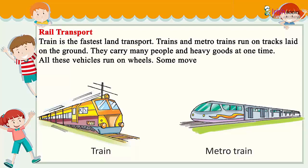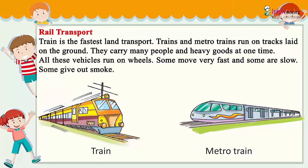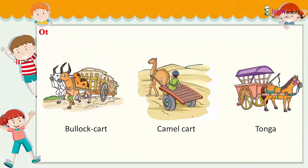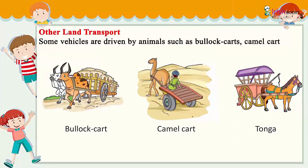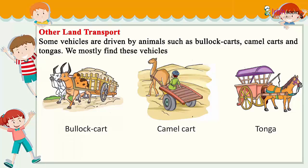Some vehicles move very fast and some are slow. Some give out smoke. Some vehicles are driven by animals, such as bullock carts, camel carts, and tongas. We mostly find these vehicles in villages.